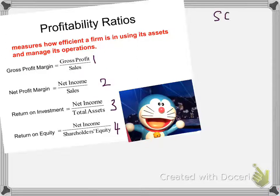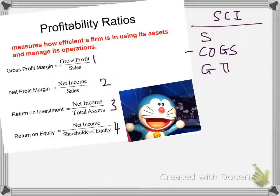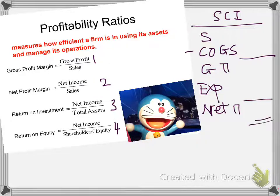If you still remember your statement of comprehensive income, you have sales minus your cost of goods, so you have your gross profit. Now, after your gross profit, you have your expenses, then after minus these expenses, you will have your net profit.